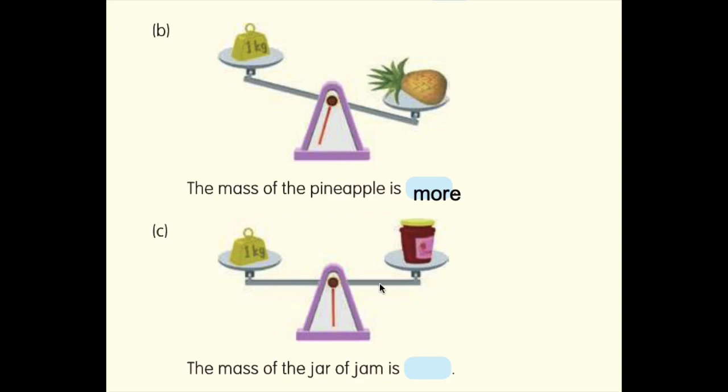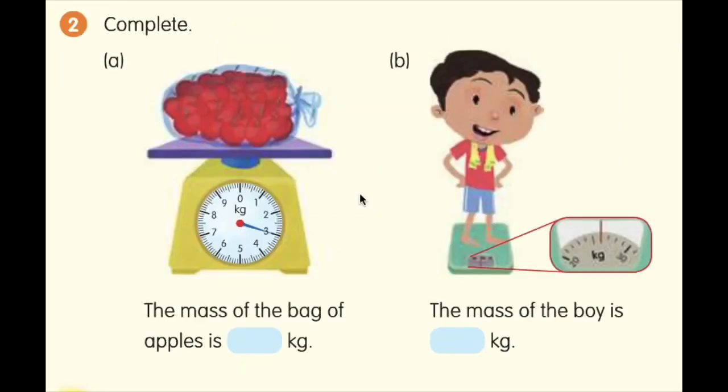They are not going down or moving up, so it means they are equal. So the jam jar is equal to 1 kg weight. Is it clear? So fine.